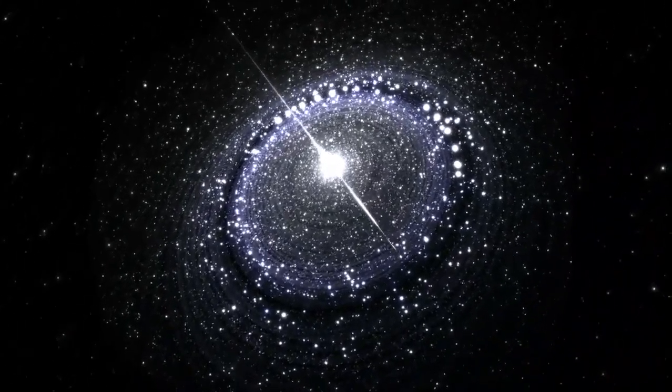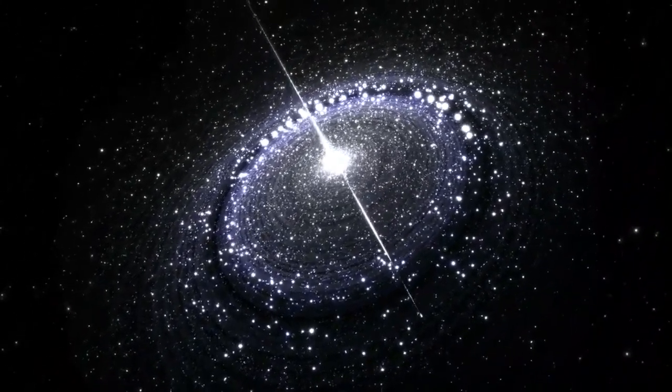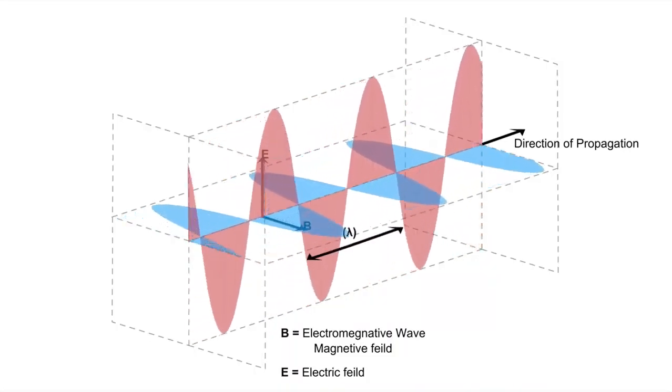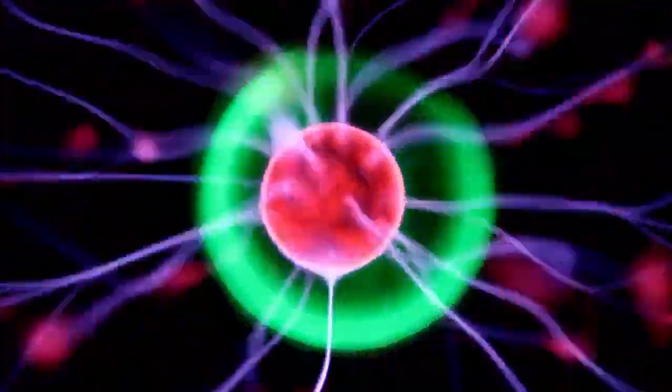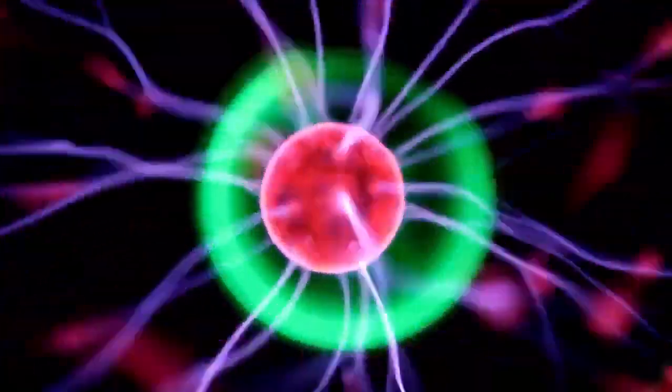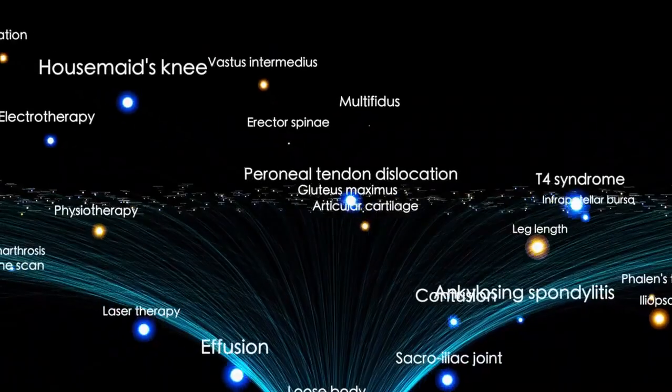Opposing this inward pull is the radiation pressure generated by nuclear fusion occurring within the star's core. Fusion reactions release tremendous amounts of energy, producing outward pressure that counters the force of gravity.